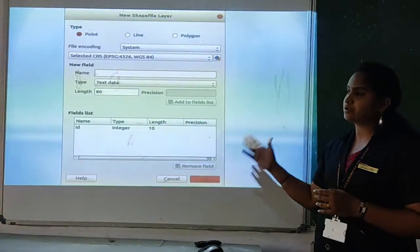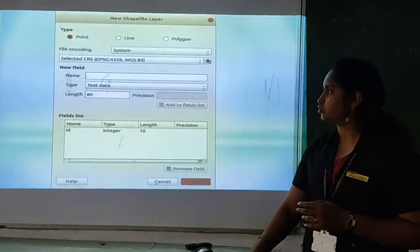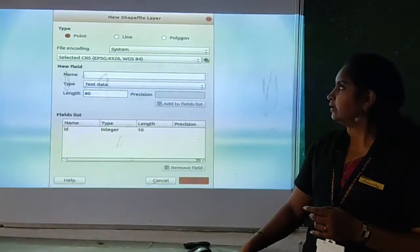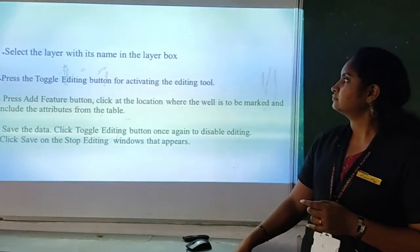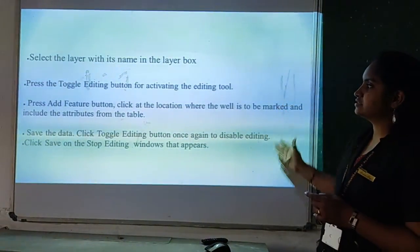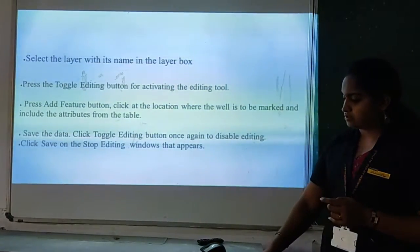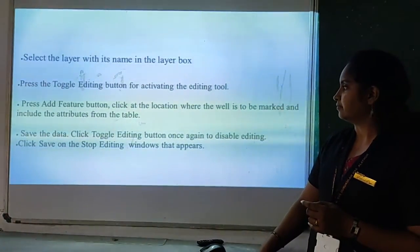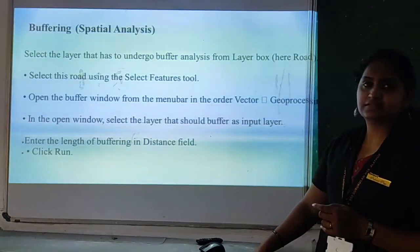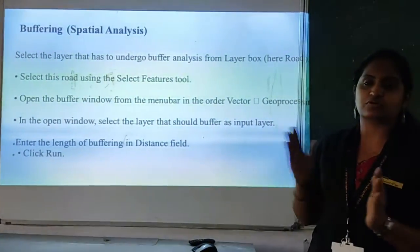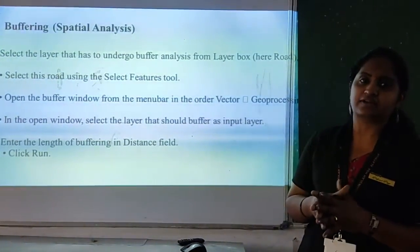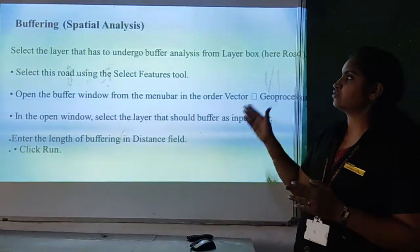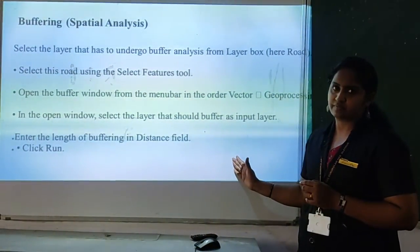By clicking, you will get the option and you can use this window to select the layer type. You can use these steps for adding a particular layer. And next is buffering — if you want to increase the width of a particular road or a space, you can use this option.